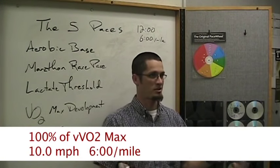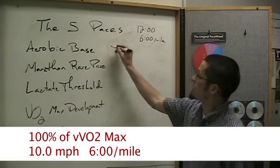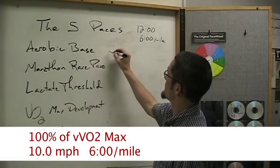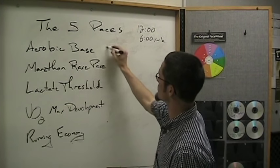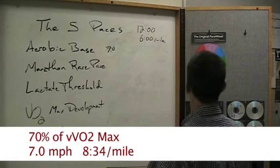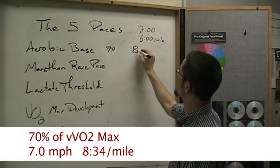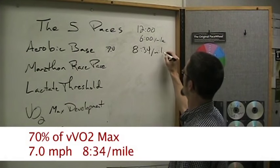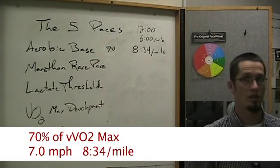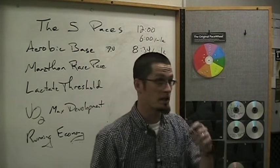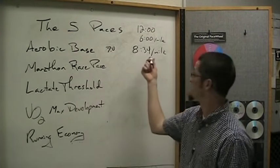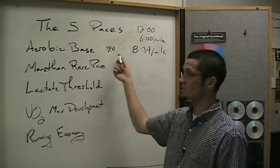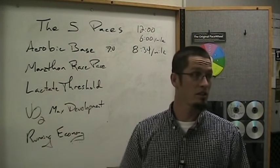For ease of explanation, we're going to use an athlete who runs a 12-minute two-mile — that's six minutes per mile — and use that as our starting point. Their velocity at VO2 max is a six-minute mile, which is 10 miles per hour. So if aerobic base pace is 70% of that, that's 7.0 miles per hour on your treadmill, which is 8:34 per mile. On their easy aerobic base training runs, that athlete is going to run 8:34 per mile, give or take 15-20 seconds, because it could be as fast as about 75%.